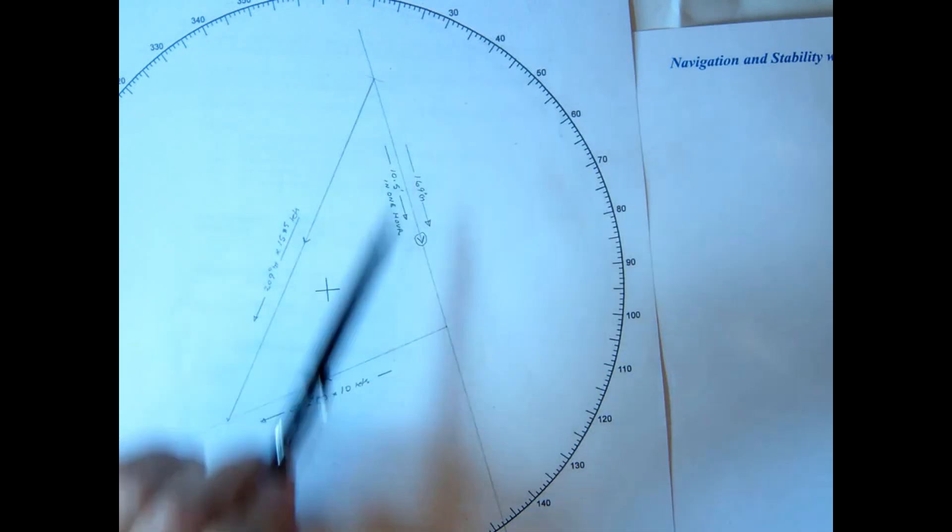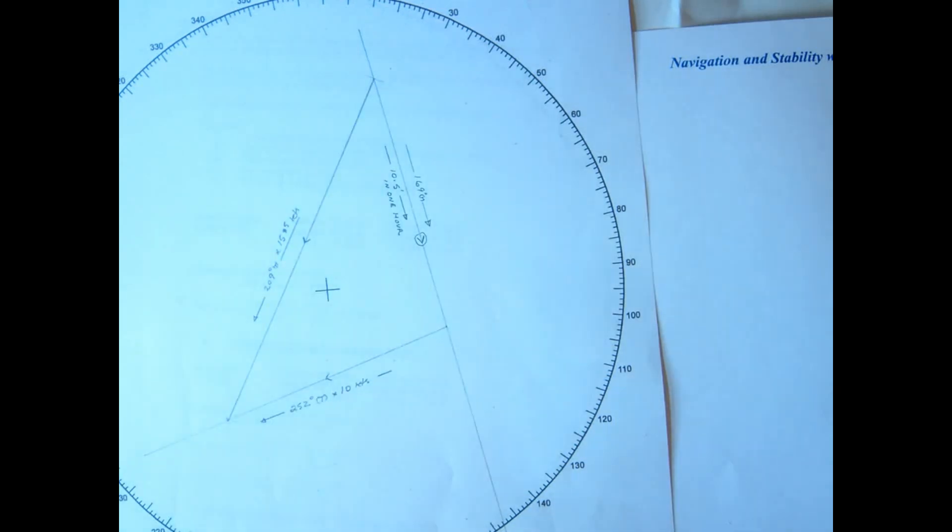Now if you actually plotted half scale, be very careful because then you'd work out the distance you would cover in half an hour. Don't forget if you did half scale you'd have to do both vessels' speed at half scale.